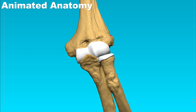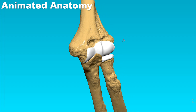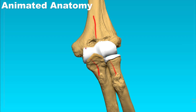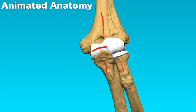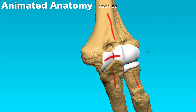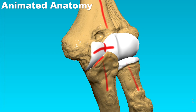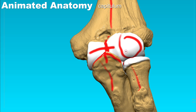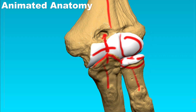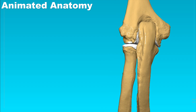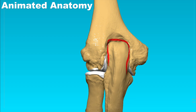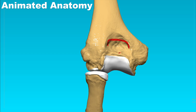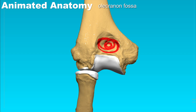Zooming in on the elbow joint — which is a joint between the ulna, radius, and humerus — the surface that articulates with the ulna is called the trochlea, and it has a median groove. The process of the ulna is called the coronoid process, and when the arm is flexed it is accommodated in the coronoid fossa. The surface that articulates with the head of the radius is called the capitulum, and the fossa above it is the radial fossa. From the back we can see the olecranon process of the ulna, which is accommodated in the olecranon fossa.